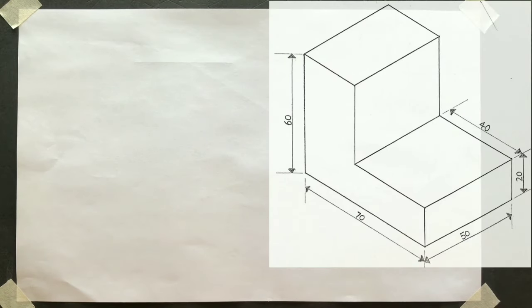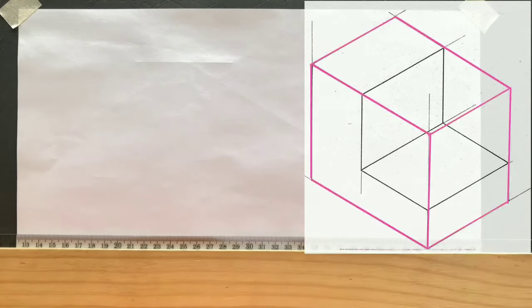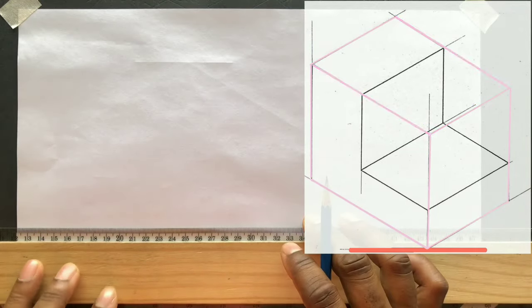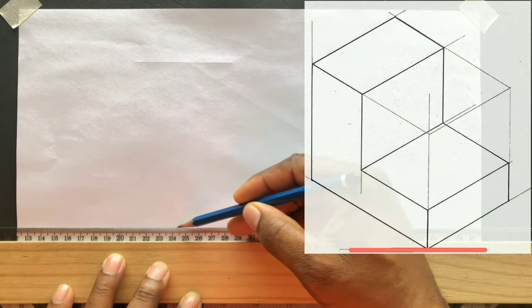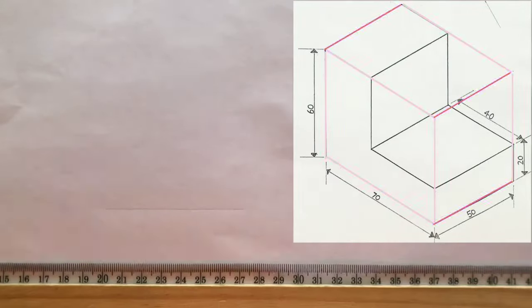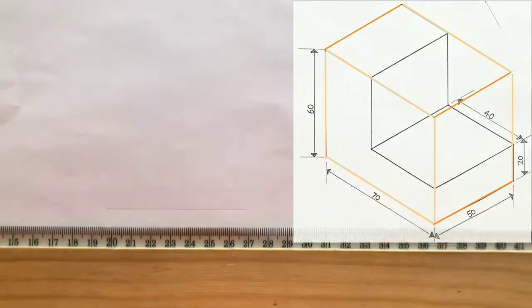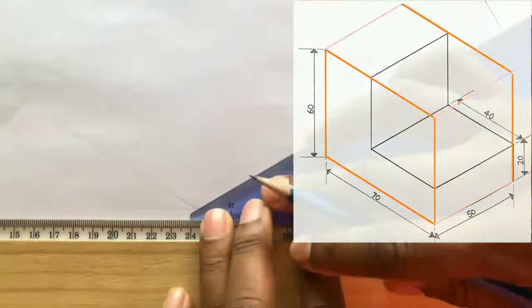You will first draw an isometric rectangle as shown. To begin, draw a horizontal baseline using your t-square. Now draw an isometric rectangle as shown to the given dimensions. Remember to use your t-square in combination with your set square.